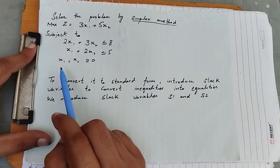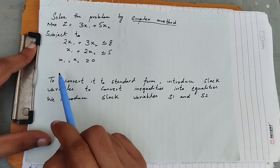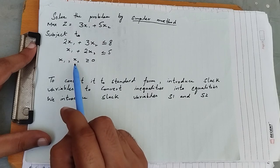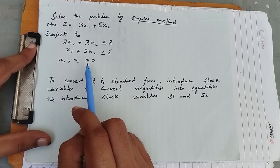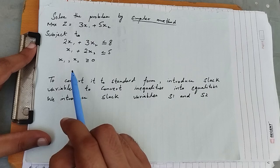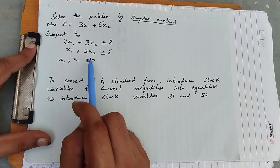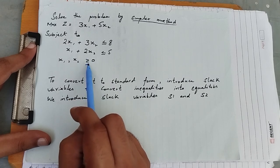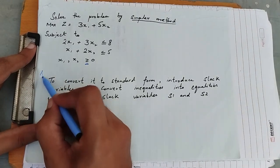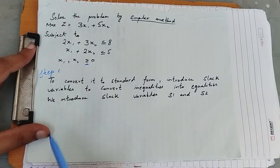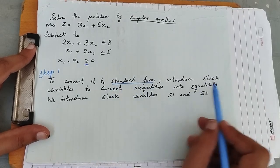The constraints are: 2x₁ plus 3x₂ less than or equal to 8, and x₁ plus 2x₂ less than or equal to 5. The non-negativity condition must always be present in any linear programming problem — x₁ and x₂, the decision variables, must be greater than or equal to 0. Let's start with Step 1.